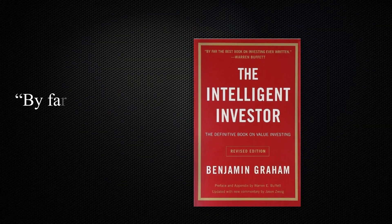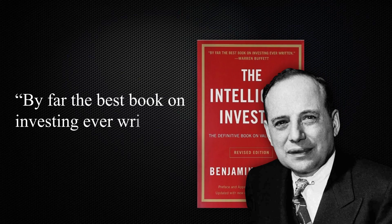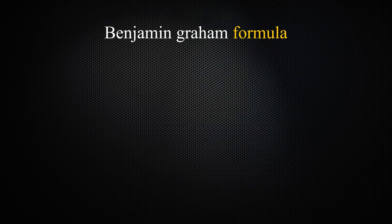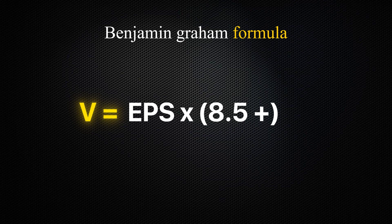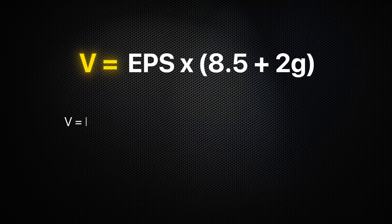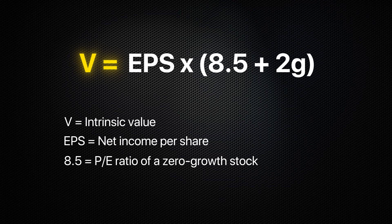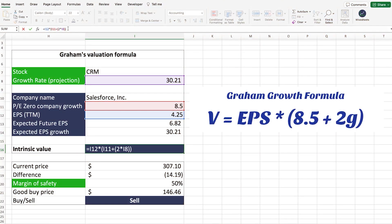The Benjamin Graham formula was created by Benjamin Graham, the original mentor of billionaire value investor Warren Buffett. The formula is V = EPS × (8.5 + 2g), where V is the intrinsic value of the company, EPS is the earnings per share over the last 12 months, 8.5 is the P/E ratio of a zero-growth stock according to Benjamin Graham, and g is the expected long-term growth rate of the company.